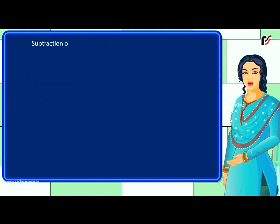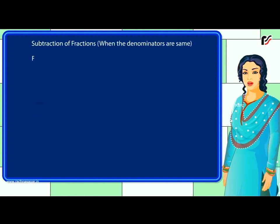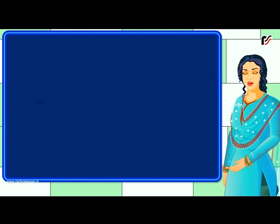Subtraction of fractions when the denominators are the same. For example, subtract 2 by 5 from 4 by 5. Solution: 4 by 5 minus 2 by 5 is equal to 2 by 5.